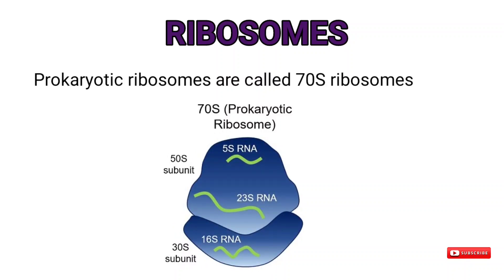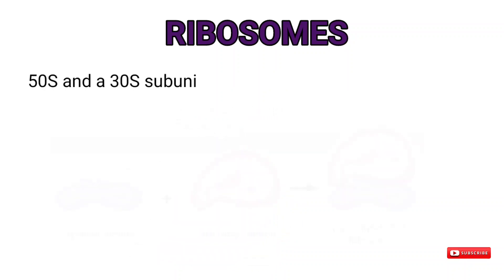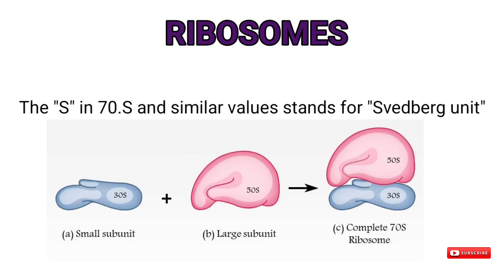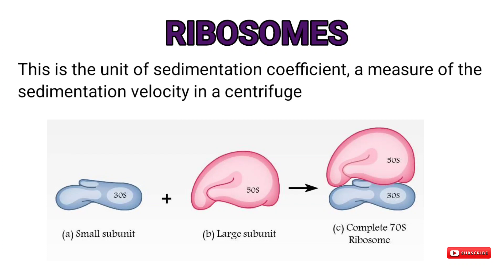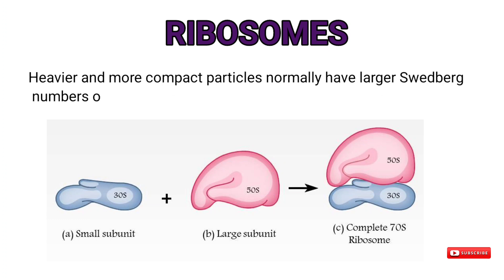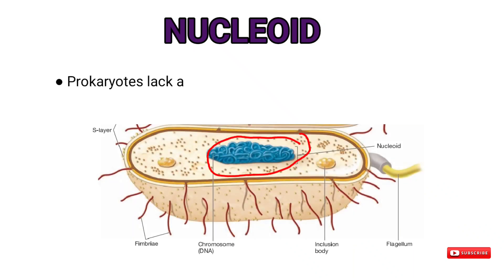Prokaryotic ribosomes are called 70S ribosomes, made up of two subunits: 50S and 30S. The 'S' in 70S stands for Svedberg unit, the unit of sedimentation coefficient — a measure of sedimentation velocity in a centrifuge. The sedimentation coefficient is a function of a particle's molecular weight, volume, and shape; heavier and more compact particles normally have larger Svedberg numbers and sediment faster.